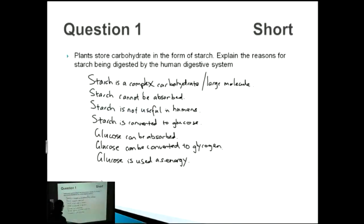If we go back to the question it seems like we're diverting from the question a bit. Explain the reasons for starch being digested by the human digestive system. We've started off with starch, then we've talked about what starch gets turned into, and then we've talked about glucose. That's the way that you have to approach these questions. You have to expand upon what the question asks you initially.